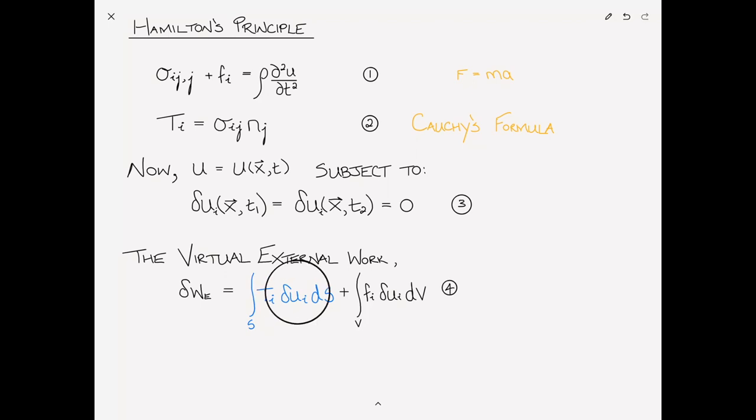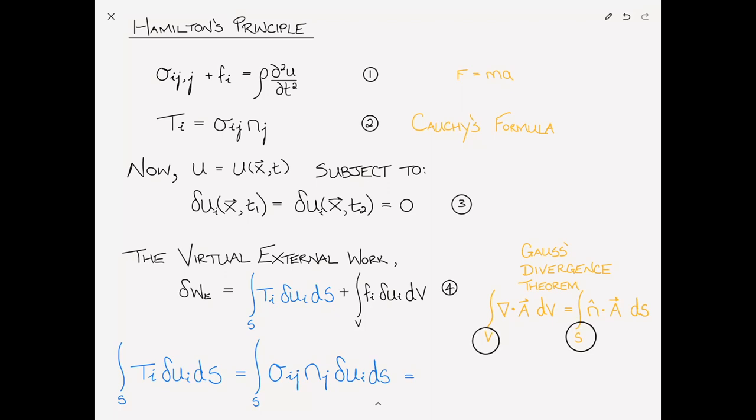Now if we pay attention for a second to the first term, the term I've written in blue, we can simplify that somewhat. So the surface integral of Ti del Ui ds is equal to the integral over the surface, and now we can substitute Cauchy's formula in here, sigma ij nj times del Ui ds, and that is equal to, we can apply Gauss's theorem here, which tells us that we can convert a surface integral into a volume integral by taking some vector times n, and then just taking the gradient of that vector.